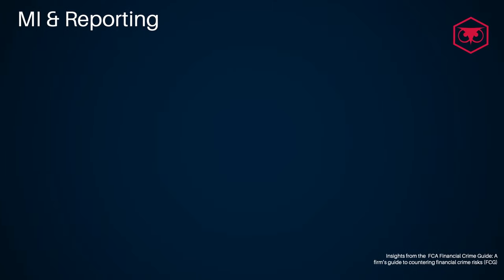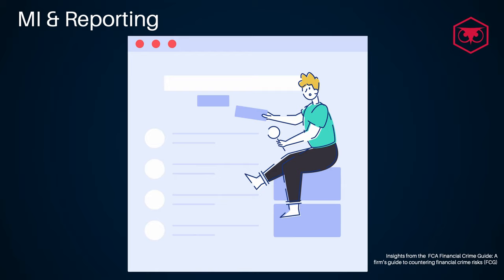Management information and reporting. Financial crime related MI must be produced to keep under control the firm's risk exposure to financial crime and comply with the regulatory reporting requirements.